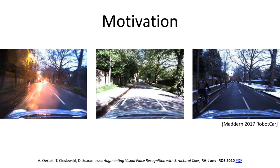A popular approach to recognize places is to do so based on single images, but this can be quite challenging as we can see here. All three images capture the same location which appears very differently in each image. The first one has been taken in the evening and exhibits some lens flare from lights directed towards the camera. The second picture is from a sunny day resulting in very high contrast and sharp shadow transitions. Finally, the third picture is taken in winter making the scene appear differently once more.